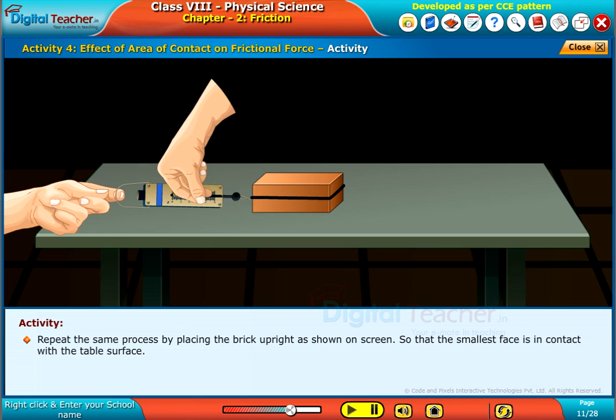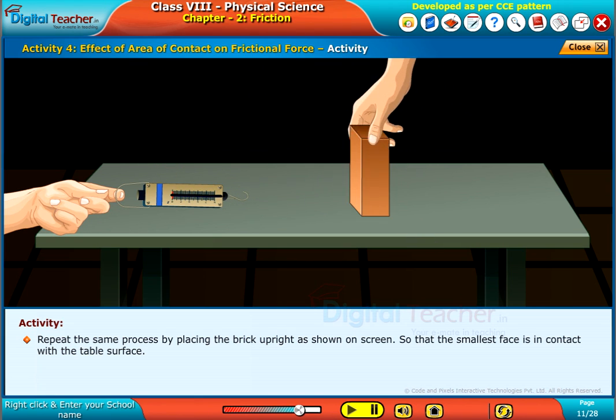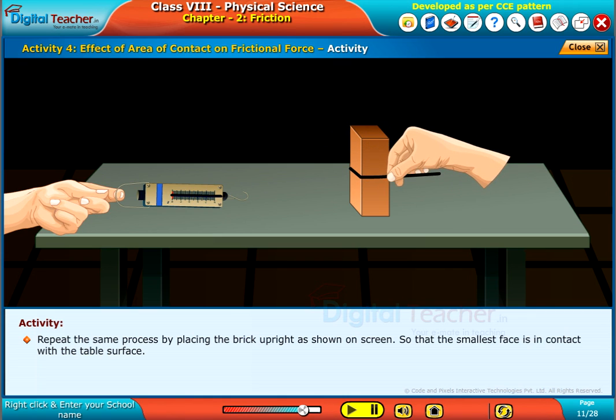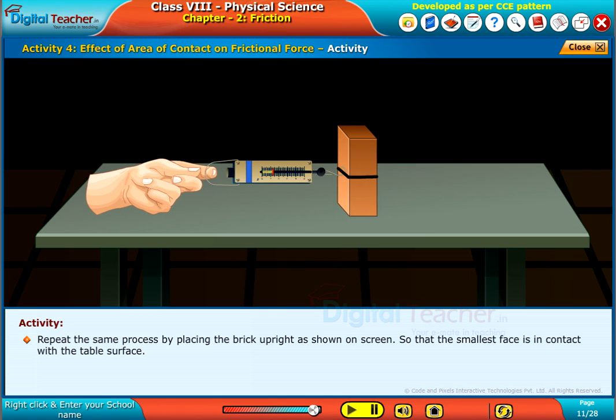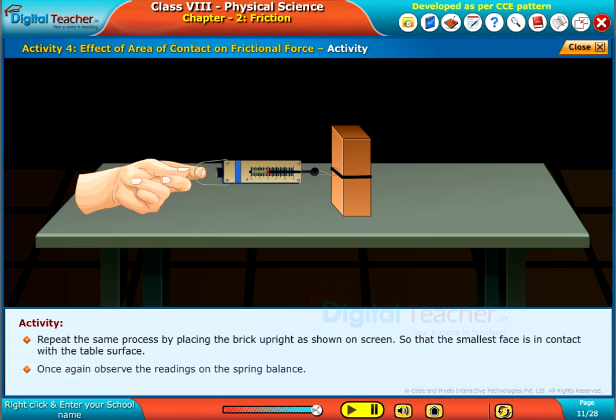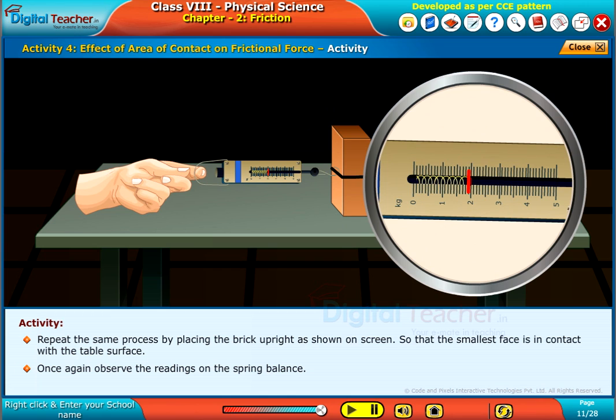Repeat the same process by placing the brick upright as shown on screen so that the smallest face is in contact with the table surface. Once again observe the readings on the spring balance.